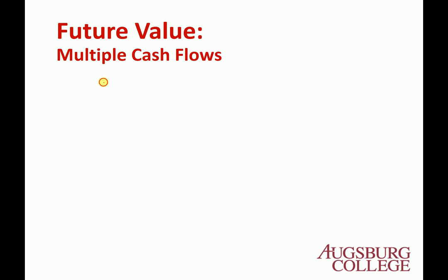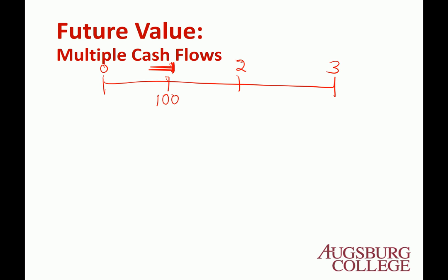If you draw the timeline: year 0 is today, then year 1, year 2, year 3. We'll ignore the direction of cash flow for now since we are using mathematics. So we have $100 at year 1, $200 at year 2, and $300 at year 3. How much will we have at year 3?